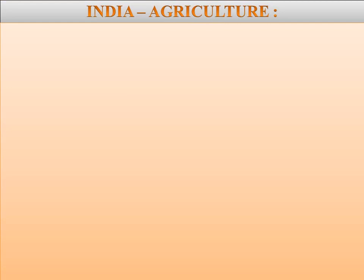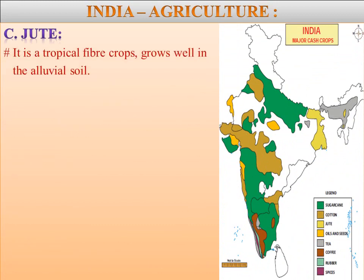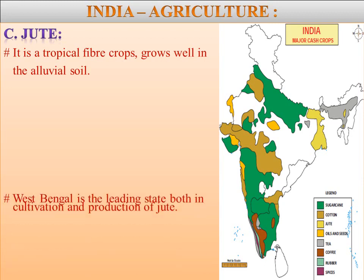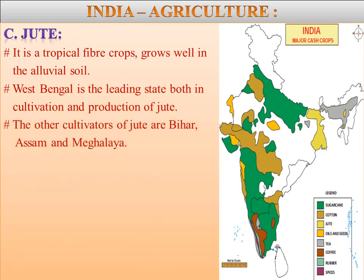Next, cash crop is Jute. It is a tropical fiber crop that grows well in alluvial soil. It provides raw material for the jute industry. It is used for manufacturing gunny bags, carpets, ropes and strings, rugs, cloths, tarpaulins, and upholstery, etc. West Bengal is the leading state both in cultivation and production of jute. Other states cultivating jute are Bihar, Assam, and Meghalaya.